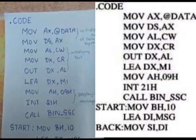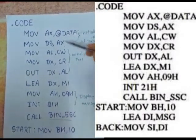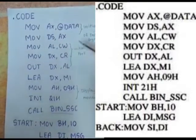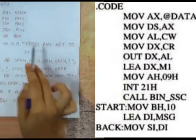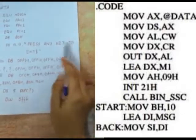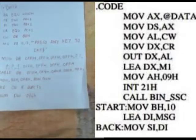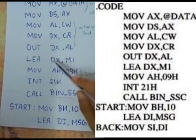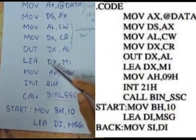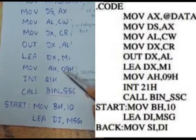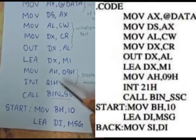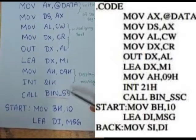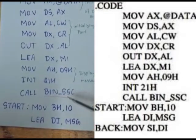Let's start tracing the code. First we need to initialize the data segment and also initialize the hardware kit with the control word CW that has been assigned 80H. We have a message 'press any key to exit' in the label M1 that we have to display on the monitor. To do that we put it in the DX register, and we can display it on the monitor using service number 09H with interrupt 21H. Now let's start converting 16-bit binary to BCD by calling the BinBCD procedure.